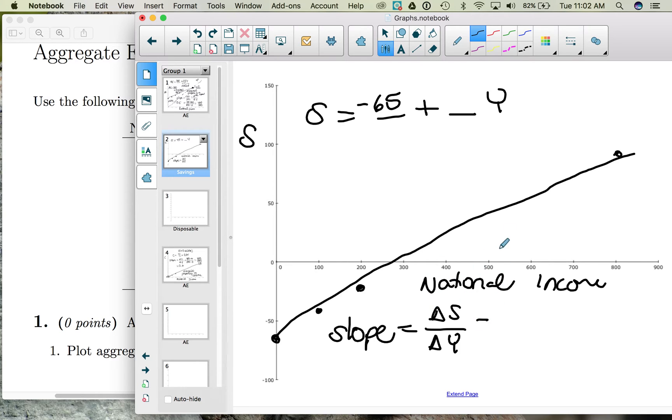So our savings goes from a negative 65 to a positive 95. So we do 95 minus a negative 65. When you subtract a negative, the number becomes added. Income goes from 0 to 800. So 800 minus 0.